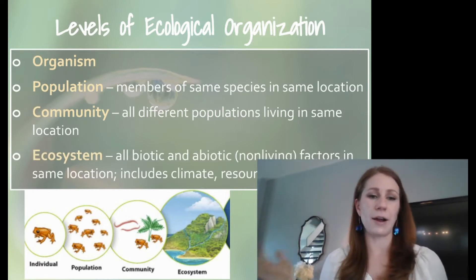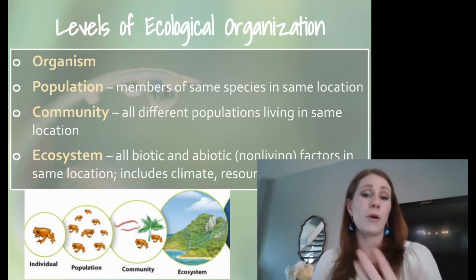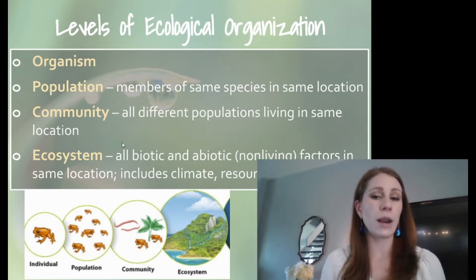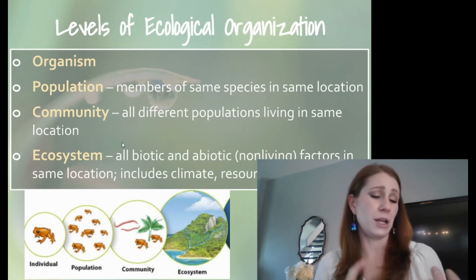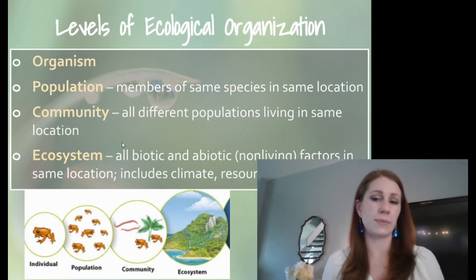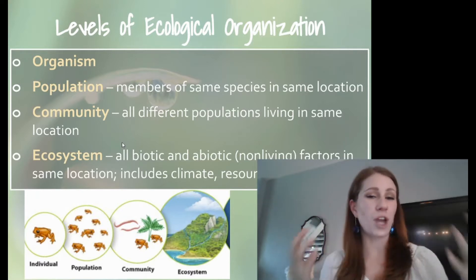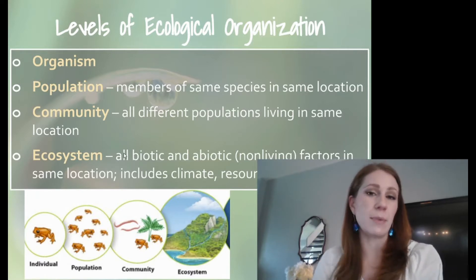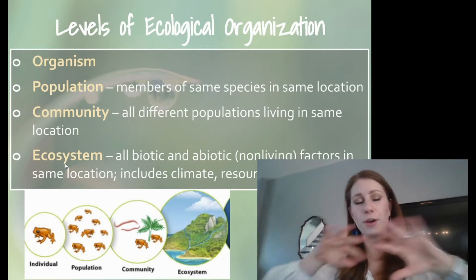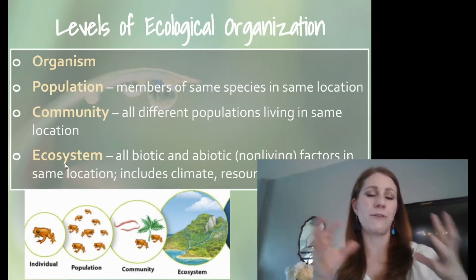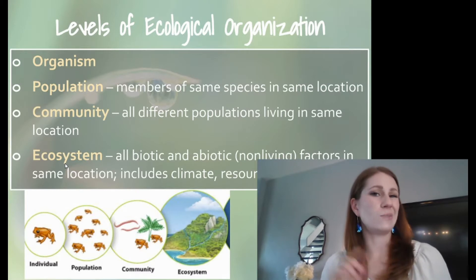Our ecosystem could be our entire North America, Texas, wherever we are. This would include all the biotic and abiotic factors in the same location — things like the weather, water, rivers, lakes, streams, and our resources. The actual shape of our land makes up our ecosystem as well. I like to think of ecosystem as basically where you live and all the parts that make up where you live. Going down from there, community is everybody, population is just members of your species, and organism is just you.